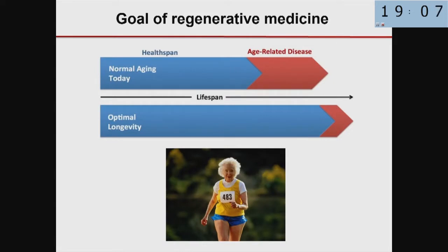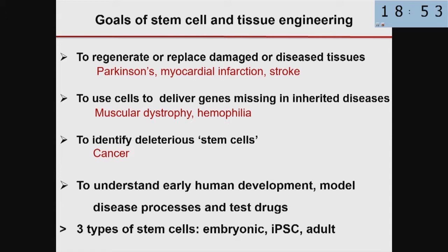The goal of regenerative medicine is to change that and to increase the health span — the quality of life — so that you can enjoy life and run and ski and do all the things you love to do even when you're aged. More specifically, the goals of stem cell and tissue engineering are to regenerate or replace damaged or diseased tissues.